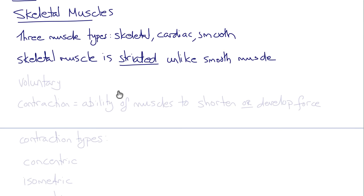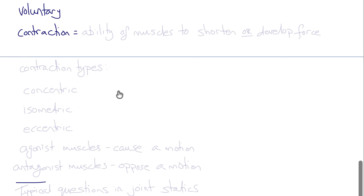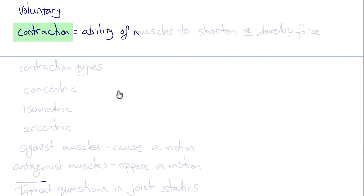Skeletal muscle is voluntary, unlike cardiac or smooth muscle. In muscle, the term contraction refers to the ability of muscles to shorten or to develop force.